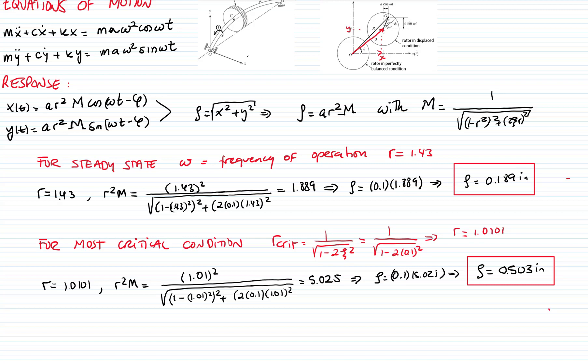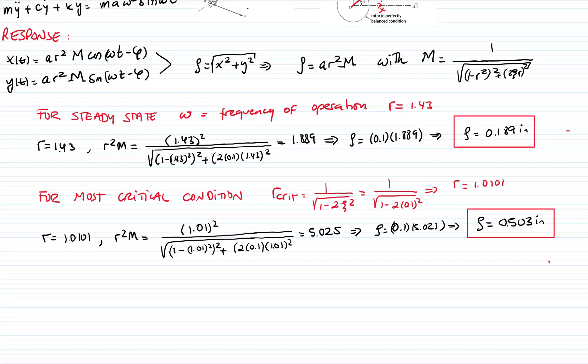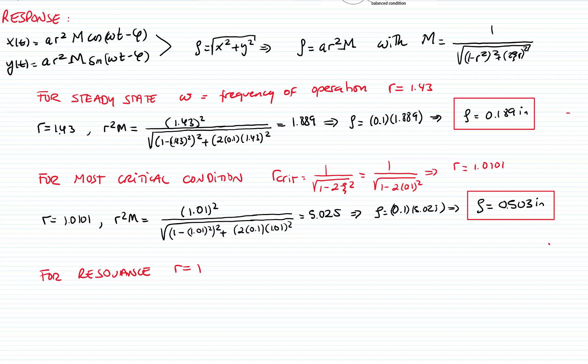Just to compare, let me calculate the response when we have resonance, which is r equals 1. Then for r equals 1, r² times the magnification factor is 1 over 2ζ. And if I plug in the values, I get that this is 5. Therefore, the amplitude is times 0.1, which is 0.5 inches. So it's very similar to the most critical condition. Let me see this graphically.